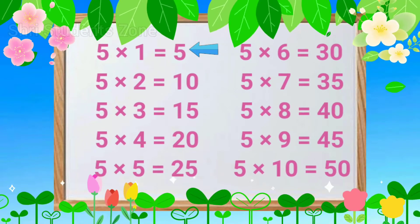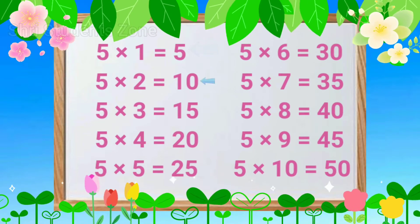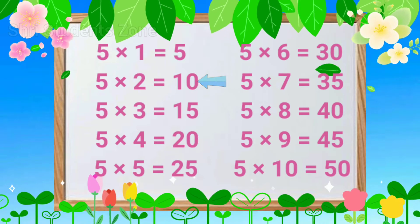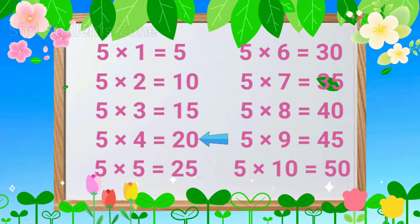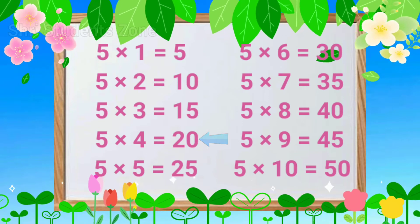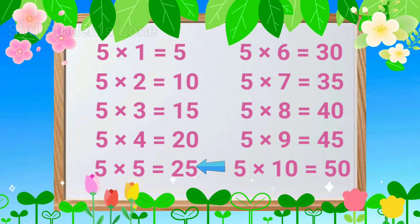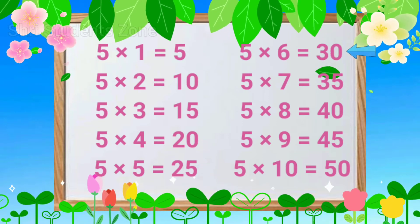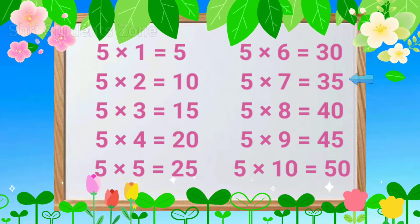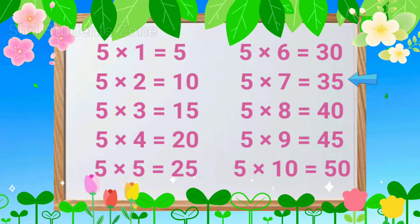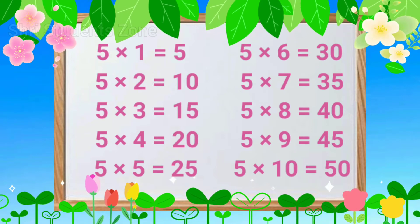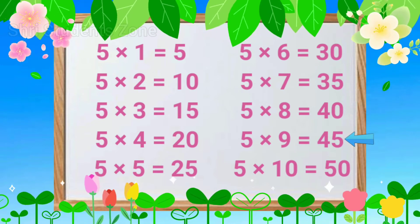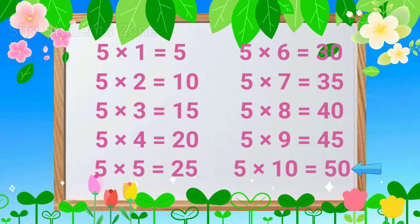Let's read again. 5 1s are 5, 5 2s are 10, 5 3s are 15, 5 4s are 20, 5 5s are 25, 5 6s are 30, 5 7s are 35, 5 8s are 40, 5 9s are 45, 5 10s are 50.